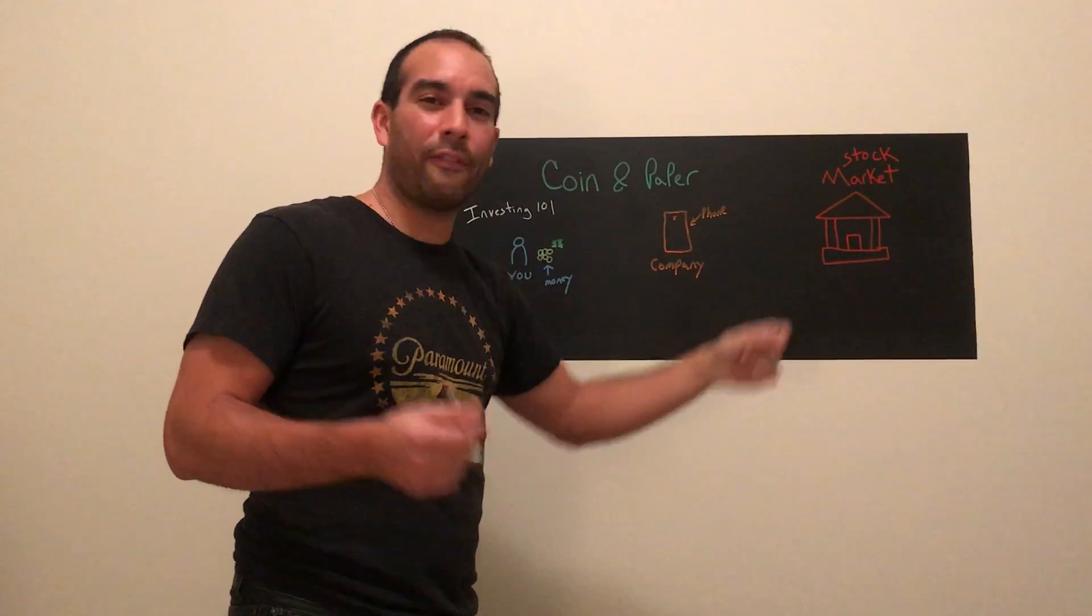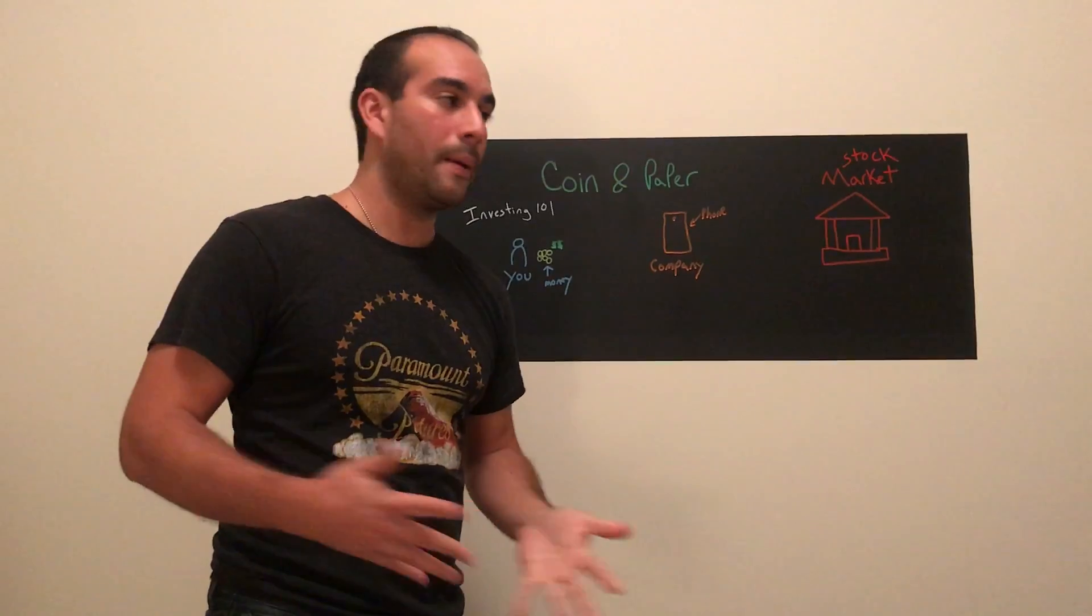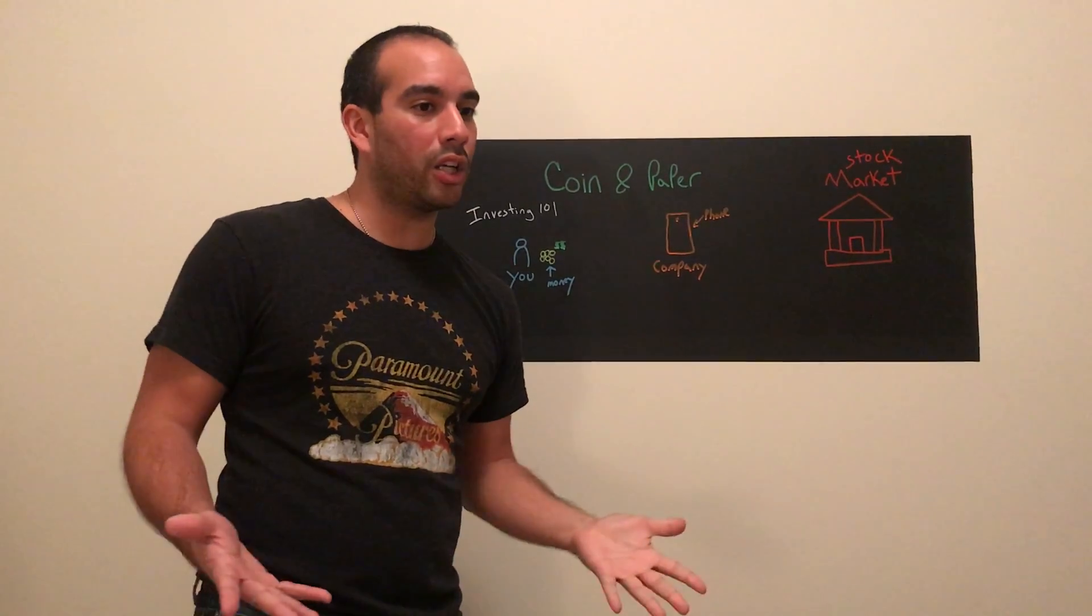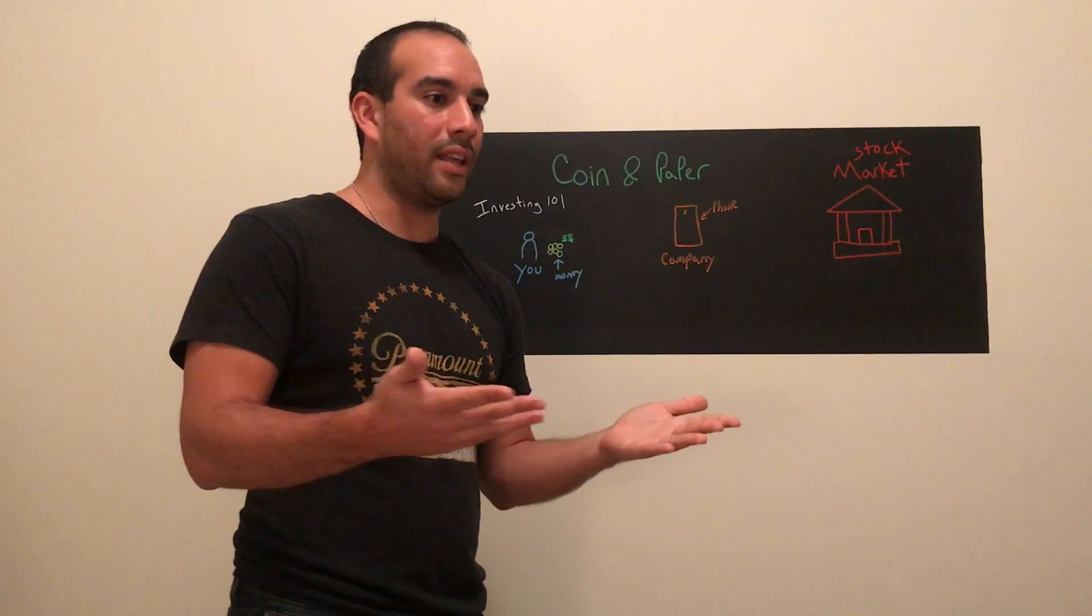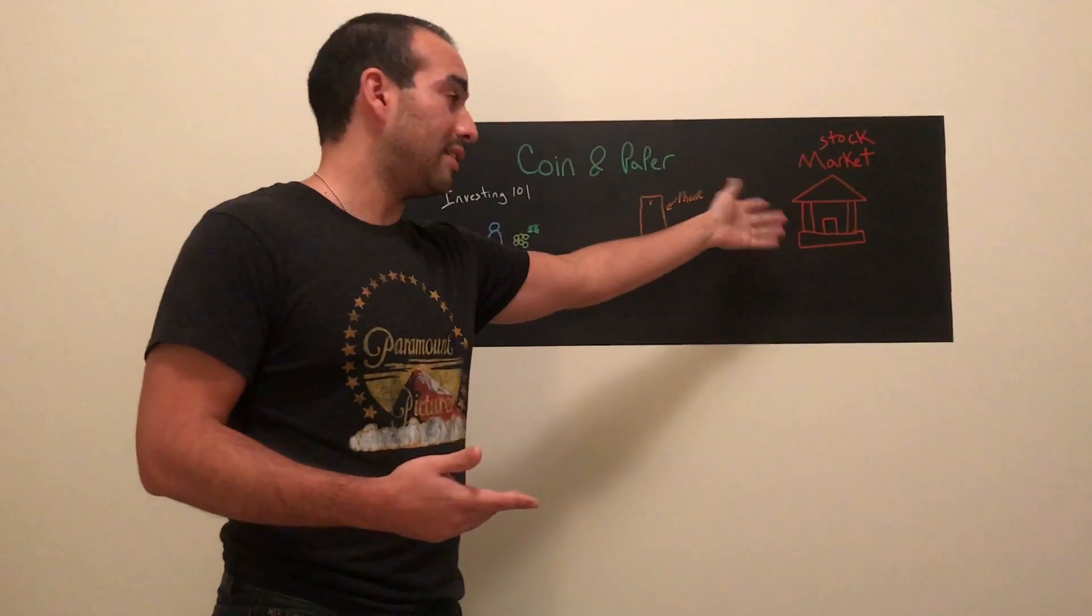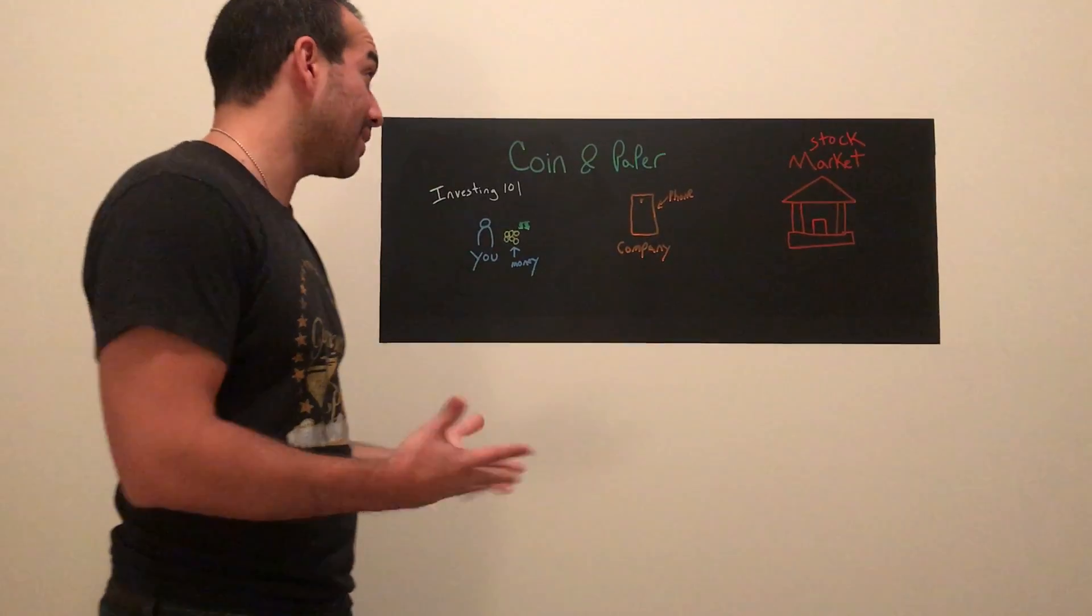They do that for a small fee called a commission. A commission could cost $11, it could cost $7—so the prices vary, but it's around there. That's what they charge you, and then you can go ahead and buy it.